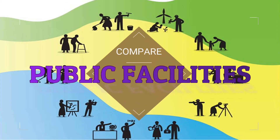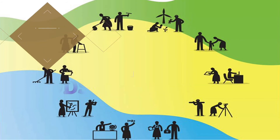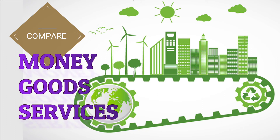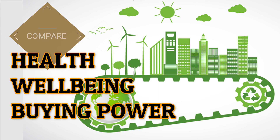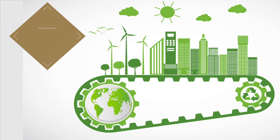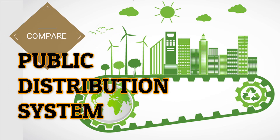Development also depends upon the public facilities that people in that country have. Money in the pocket is not enough — goods and services are required to live. So health, well-being, your buying power, the environment around us — all this makes a difference. And so comes the public distribution system, where wealth and facilities are distributed equally among all members of the society.